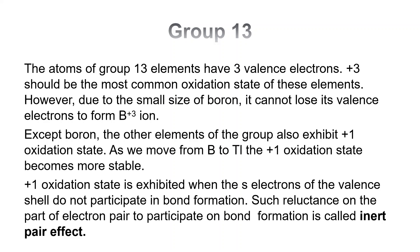Except boron, the other elements of the group also exhibit a +1 oxidation state. As we move from boron to thallium, the +1 oxidation state becomes more stable. The +1 oxidation state is exhibited when the s-electrons of the valence shell do not participate in bond formation. Such reluctance on the part of the electron pair to participate in bond formation is called the inert pair effect.